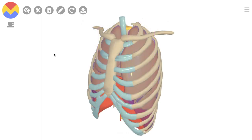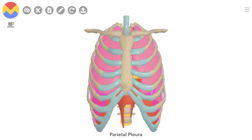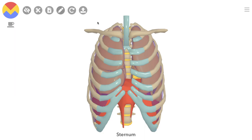Let's move to a more complex model now. Here's the parietal pleura — it has its apex about two and a half centimeters above the clavicle. We'll now follow it down the anterior chest wall. It runs down the line of the sternum to the fourth costal cartilage and continues straight down on the right-hand side to the xiphisternal joint at the bottom of the sternum.